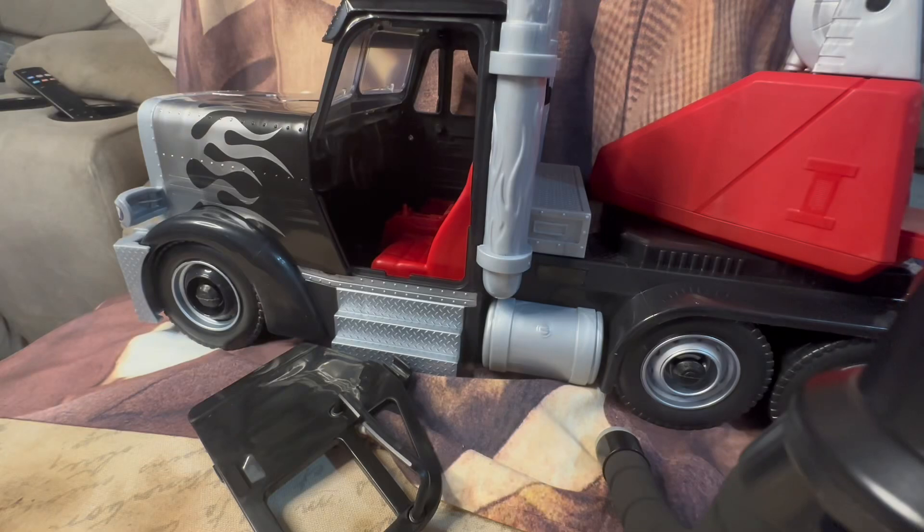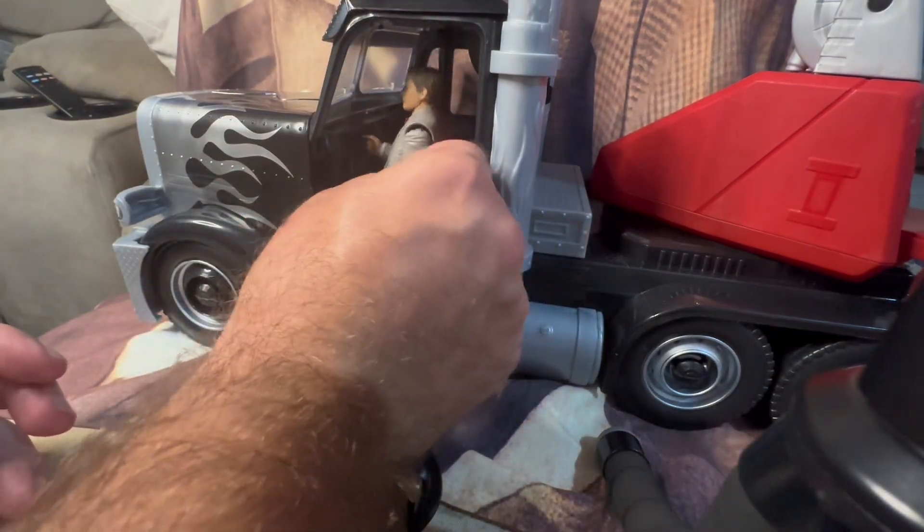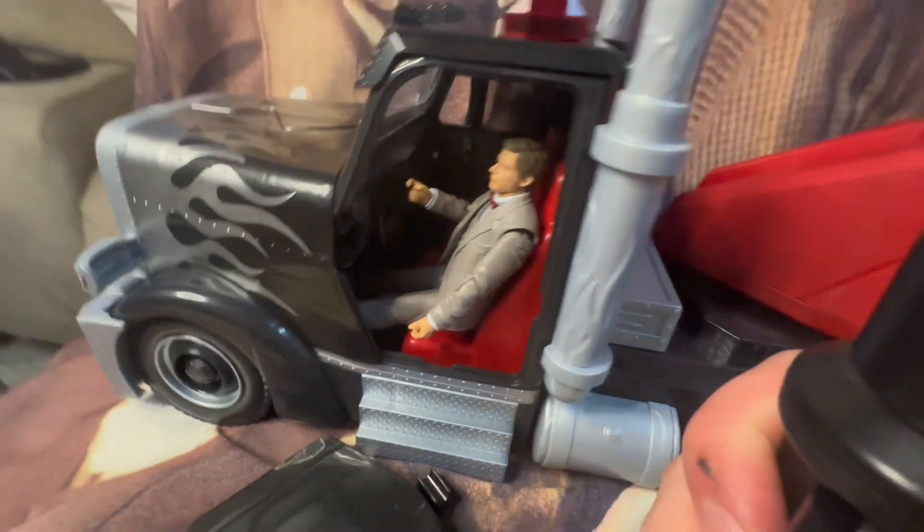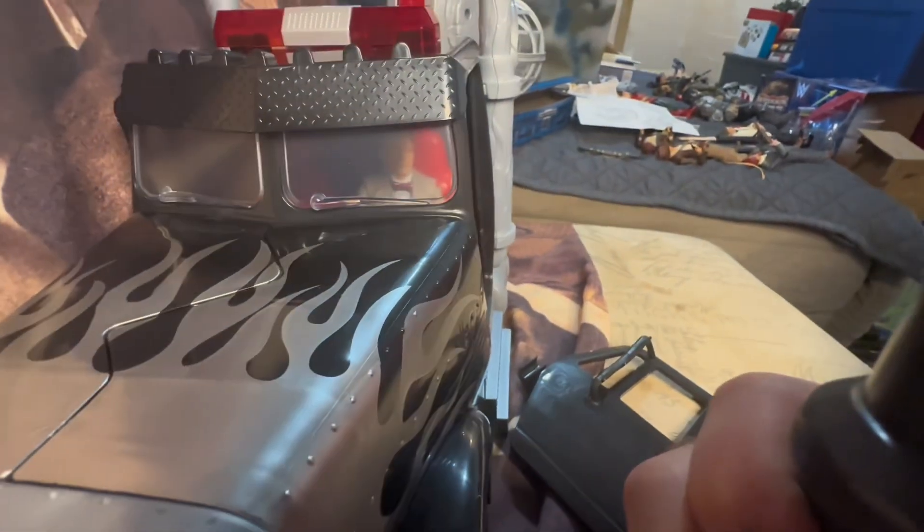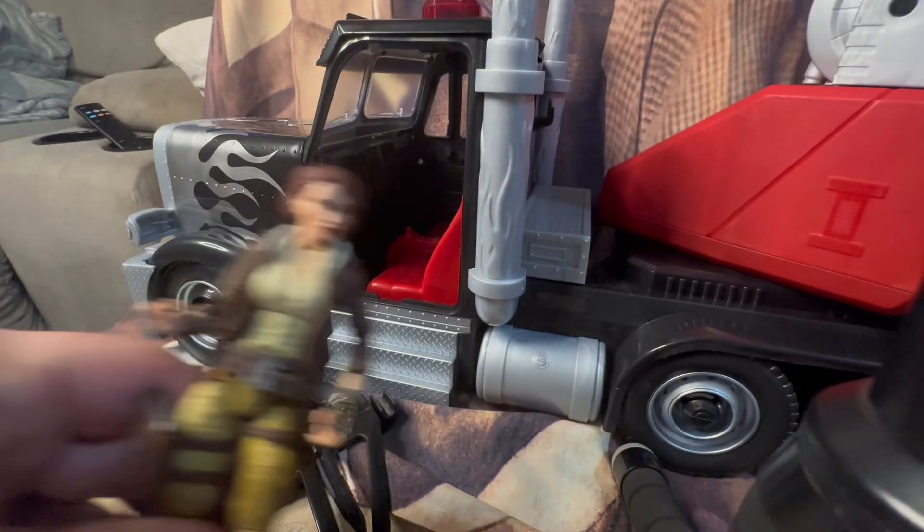So now let's go ahead and take a look at what figures can fit in here and how they look. We'll start off with Dr. Jones here. Let's see how Dr. Jones sits. He sits okay. He's right there at the steering wheel. I mean it's a big rig. Here's what he looks like on the inside, it looks pretty good actually.